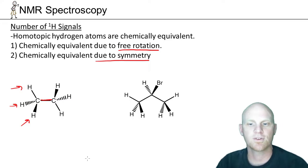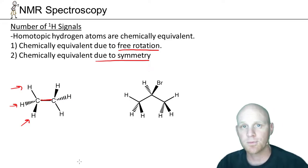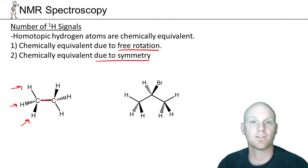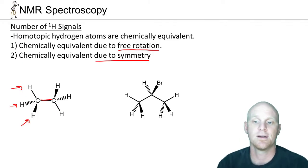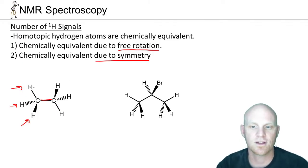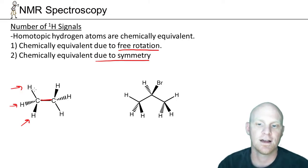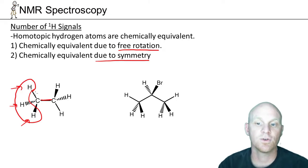Notice the same kind of rotations we saw when going from staggered to eclipsed conformations. Any single bond is free to rotate as long as it's not part of a ring. As this bond rotates, these three hydrogens are going to experience the same average environment, so all three are chemically equivalent due to free rotation.